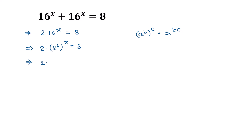Applying this formula, with 2 as a, 4 as b, and x as c, we get a to the power b times c — that means 2 to the power 4 times x. So 2 to the power 4x is equal to the right side, which is 8.